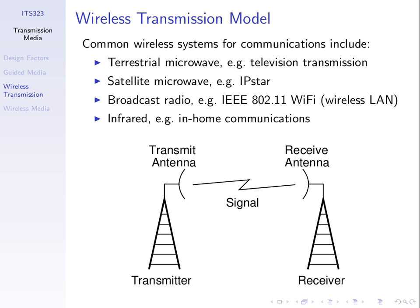We often refer to the transmitted power level PT — the subscript T for transmit — and PR for the received power level. We'd like to know: if I transmit at some power level, say one watt, and my signal needs to travel one kilometre, what power level is it received at? We use L to indicate the loss of signal strength between transmitter and receiver.